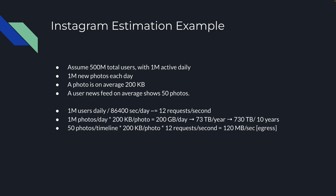Let's look at an Instagram example. Assume 500 million users with 1 million active on any given day, 1 million new photos per day at 200 kilobytes each, and a news feed showing 50 photos on average. With 1 million daily users and 86,400 seconds in a day, that's roughly 12 requests per second. One million photos at 200 kilobytes each equals about 200 gigabytes per day — roughly 73 terabytes per year, or 730 terabytes over 10 years. Showing 50 photos at 200 kilobytes each at 12 requests per second gives about 120 megabytes per second egress.